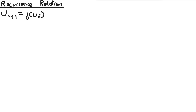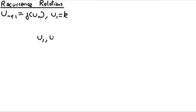What this means is the term n+1 is defined by a function of the term n, so the term just before it. With recurrence relations, we have to say what the first term in the sequence is — so u1 equals some value k — as we have to have a starting point. The u_n notation is just a shorthand way of saying this is term 1, term 2, term 3, etc.